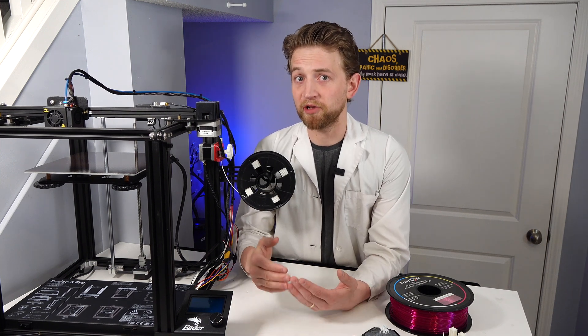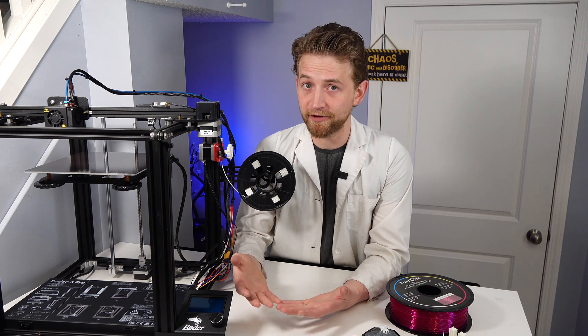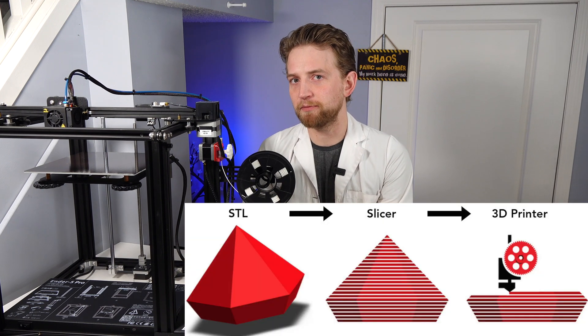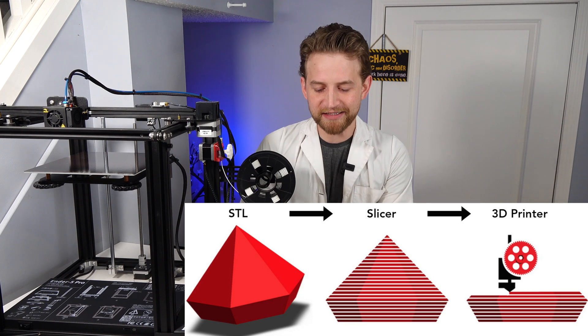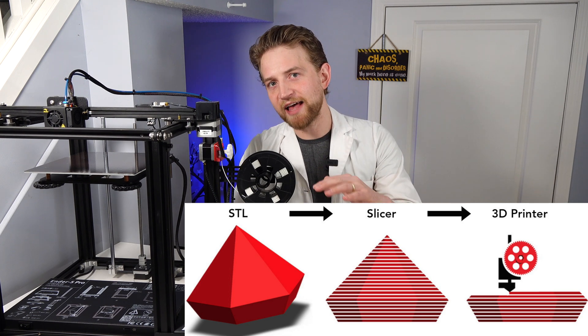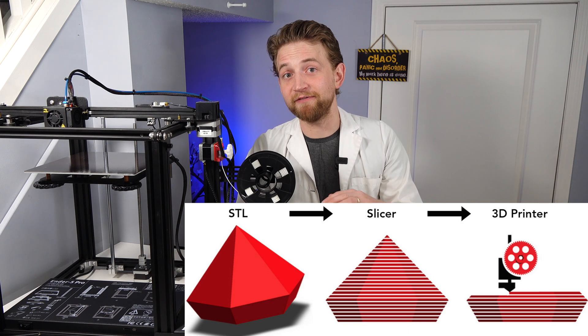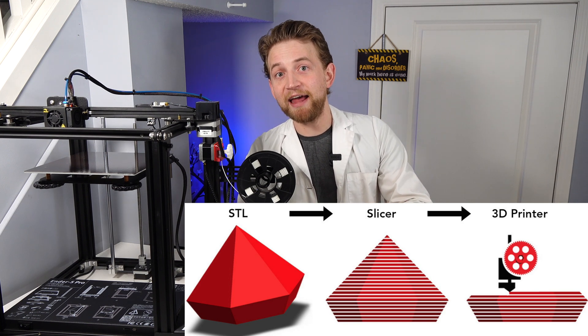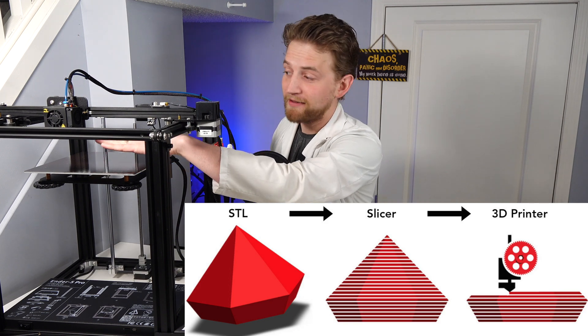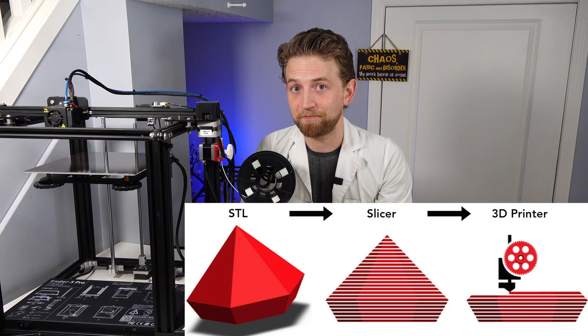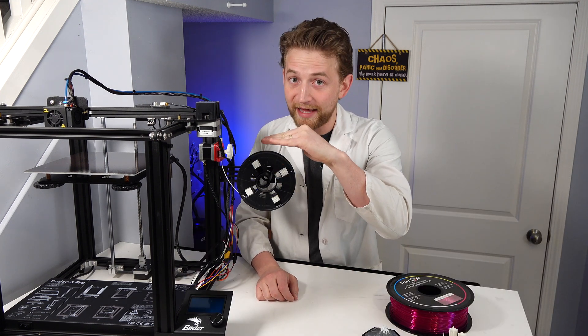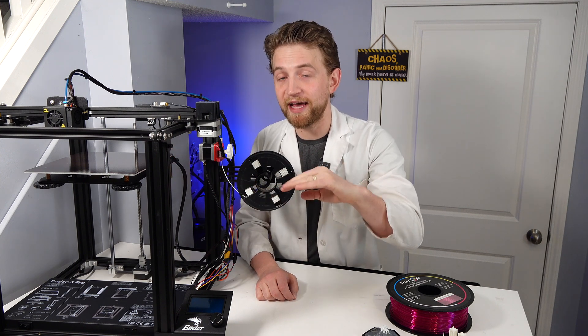When you download a virtual model online from, say, Thingiverse, you have to slice it for your printer. And when I say slice it, it means that there's a special computer program that actually divides that 3D model into hundreds or thousands of different slices. And each slice is only one paper-thin layer on your 3D printer. And it's those slices that get printed before the bed on your 3D printer lowers down.